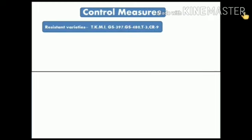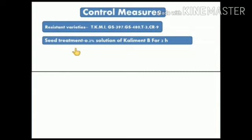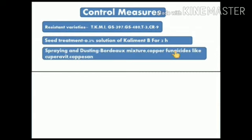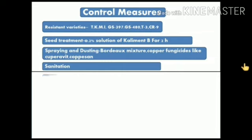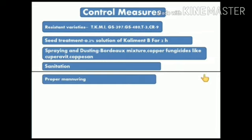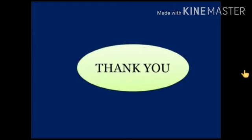Now we learn about the various control measures. First, grow resistant varieties like TKMI, GS397, GS480, T3, and CR9. Second is seed treatment. Third is spraying and dusting with Bordeaux mixture, copper fungicides like copper oxychloride and copper sulfate, sanitation, and proper manuring. These are the control measures which can be used. This is all about blast of rice. Thank you.